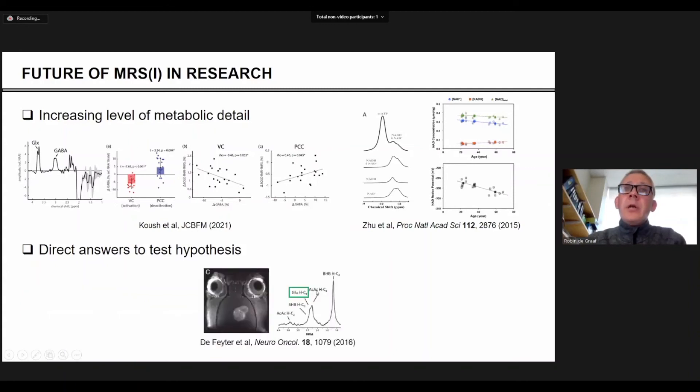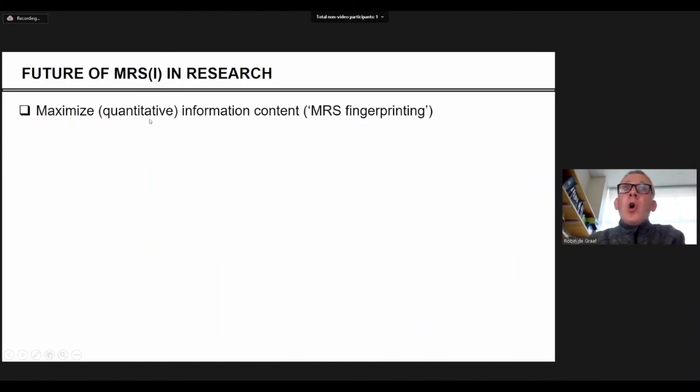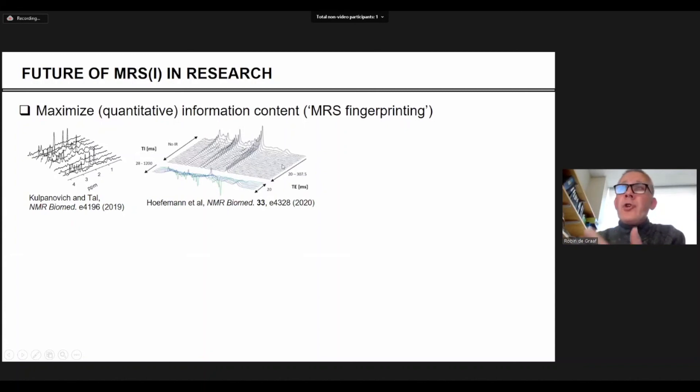Now, if you want to answer this question, you just buy carbon-13 labeled BHB and give it to an animal or a human subject with a brain tumor. And if you see the formation of C-13 labeled glutamate, then you know that the BHB has been taken up by the tumor and has been metabolized by the tumor. I think we're going to see a good push also to maximize the amount of information you get from spectra. This is some data from the Israel group, similar data from the Zurich group and Zhen Tian at NIH is doing similar work as well. Basically acquiring a lot of data from different echo times and different repetition times and then model everything together to get metabolite concentrations, T1 relaxation, T2 relaxation and basically any parameter that the experiment is sensitive to.